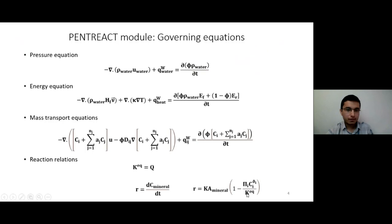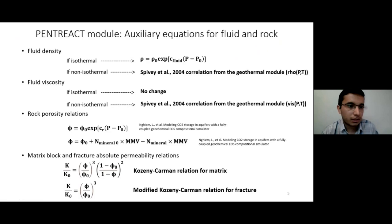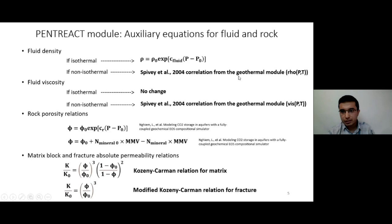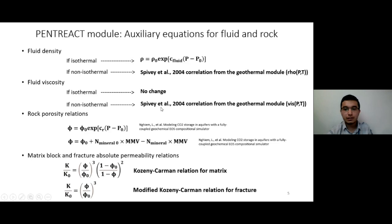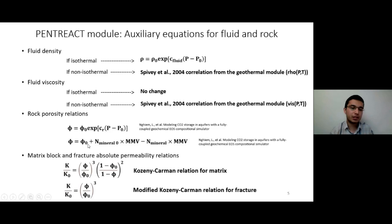There are some auxiliary equations used in the code. For updating fluid density when pressure changes in isothermal systems, a specific relation is used; for non-isothermal systems, a correlation from the geothermal module is used as a function of pressure and temperature. For updating fluid viscosity, in isothermal systems the effect of pressure on viscosity is negligible, so no change is considered; for non-isothermal systems, a correlation from the geothermal module is used as a function of pressure and temperature. For updating porosity values, a relation accounts for the effect of pressure on porosity, and when solution and precipitation occur, porosity changes are updated accordingly.